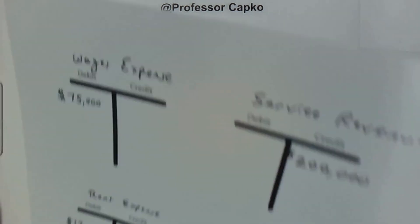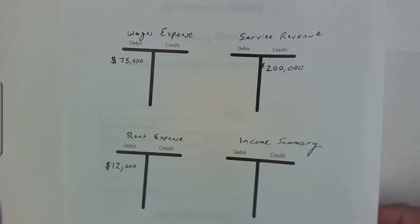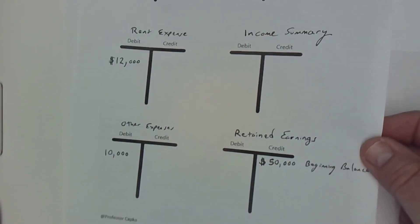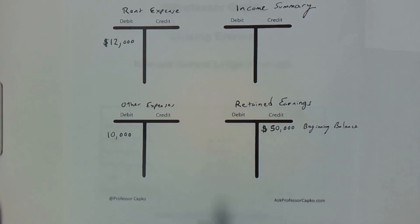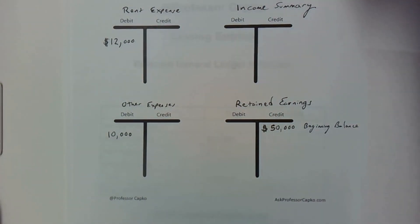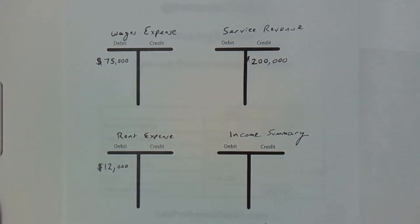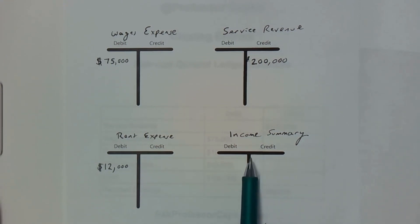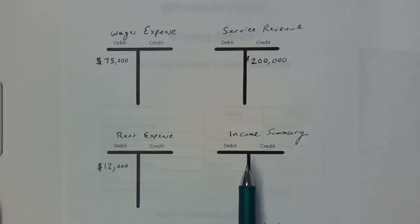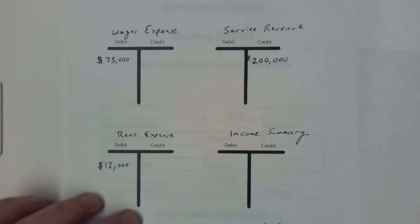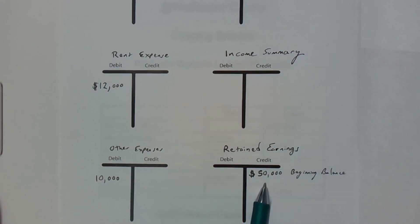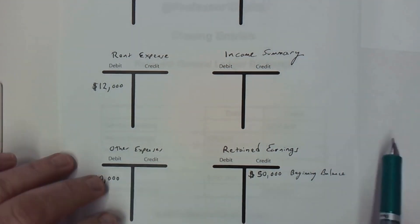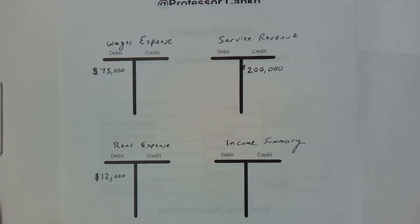I've transferred these balances to T-accounts because I think it's a lot easier to see this way. If you'd like your own T-account form, you can find it in the description of this video — an official Professor Capco T-account form you can print out and fill in yourself. We're going to be closing to the income summary account, which is a place to park the entries before moving them on to retained earnings. I've got the $50,000 credit balance already sitting in retained earnings and all other balances transferred to T-accounts, so we can now close them out.